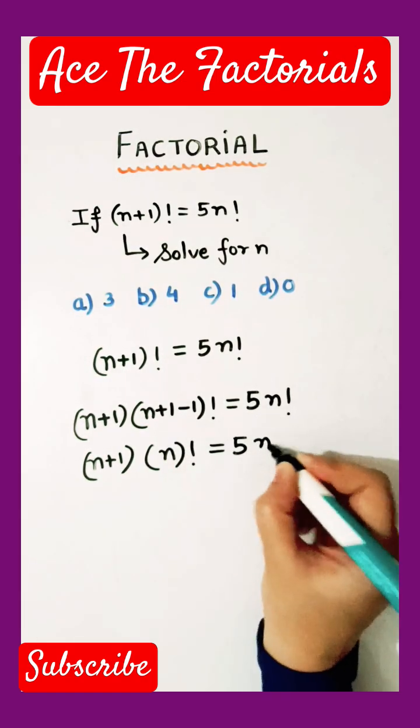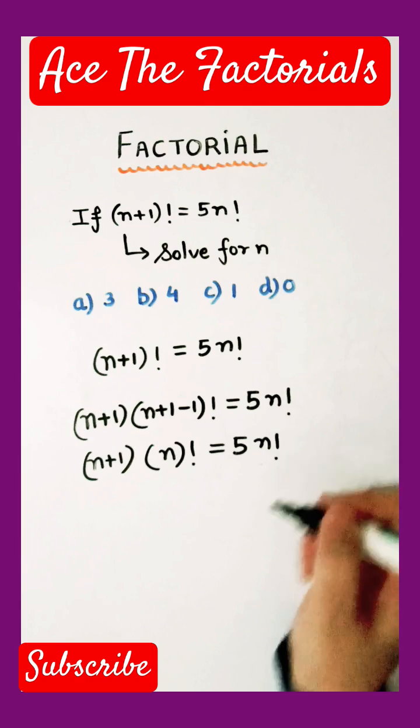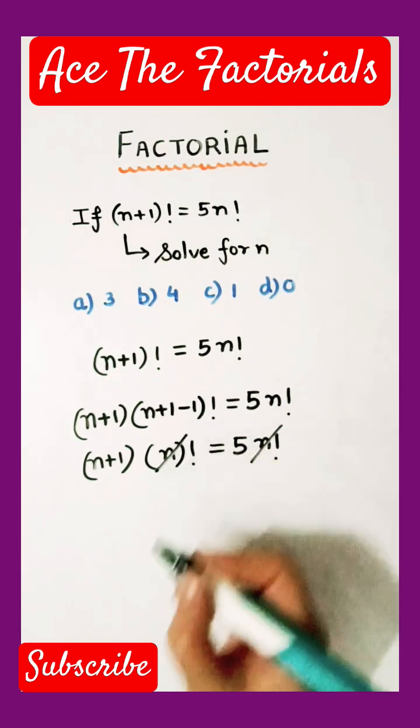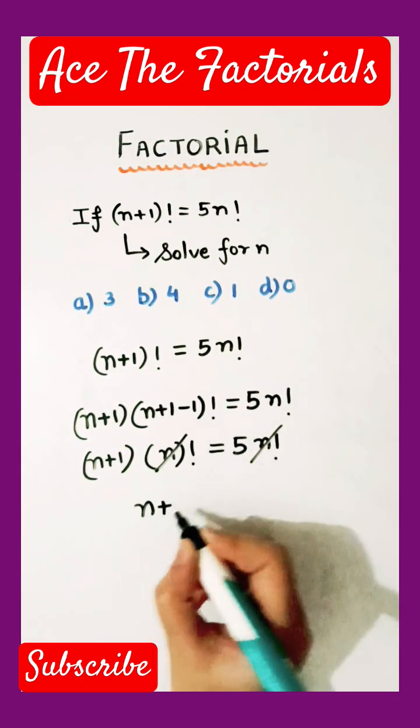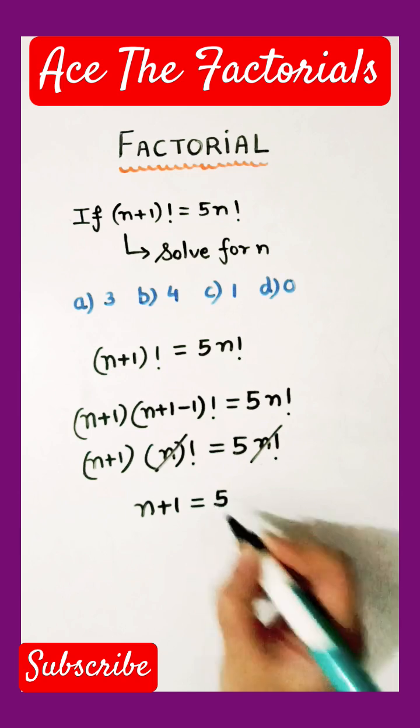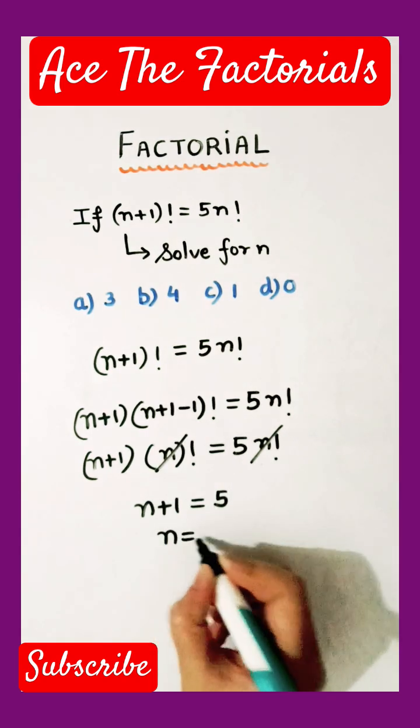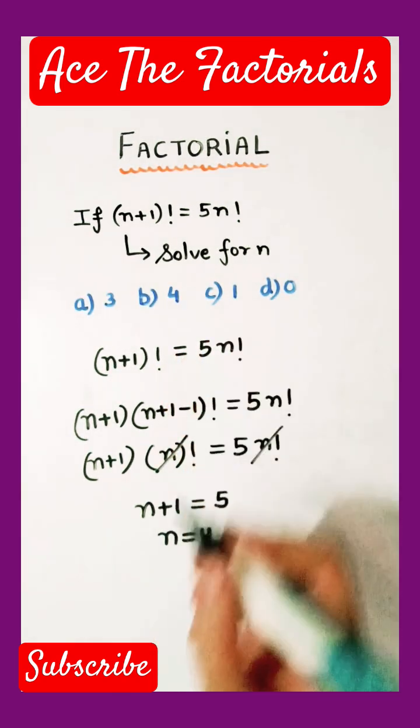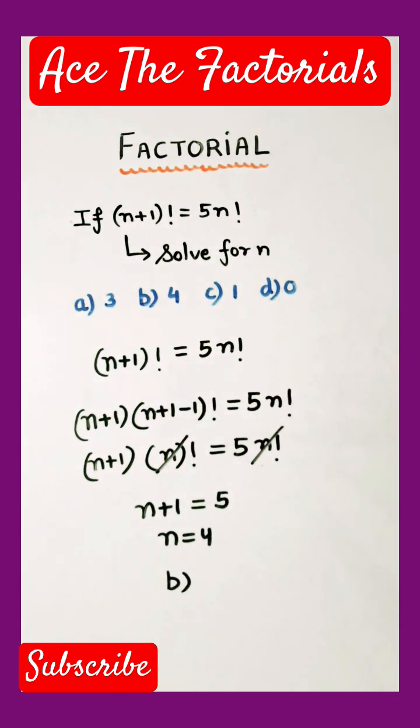This is going to be the same on the right hand side. So these n factorials are cancelled out. We are left with n plus 1 equals 5, so n is 4. Option B. Thank you.